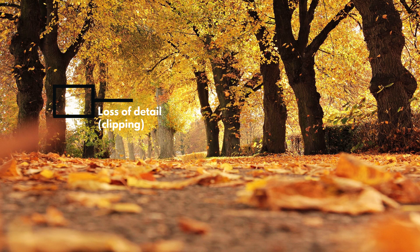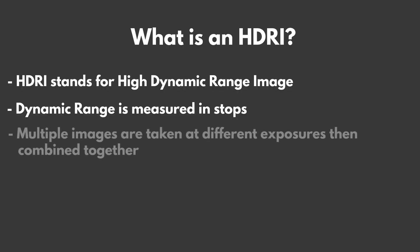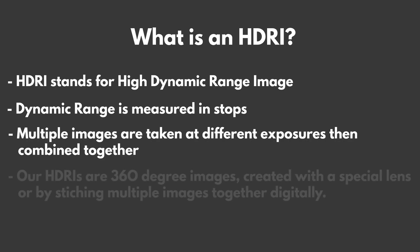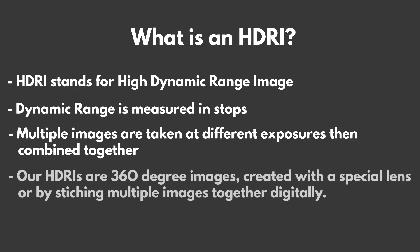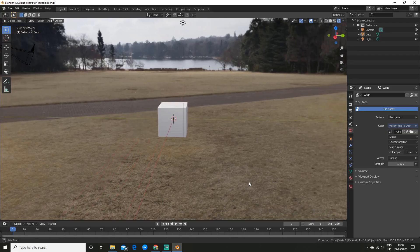Typical cameras can only shoot at a certain maximum amount of stops, so to get a higher dynamic range, multiple images are taken at different exposures and then combined into one. In the case of HDRIs they are also 360 degree images, which is usually achieved with a special lens or by stitching multiple images together. We can use these HDRIs in Blender to get full 360 degree lighting and reflections, just like the real world, which is why HDRIs are an easy way to get realistic lighting.